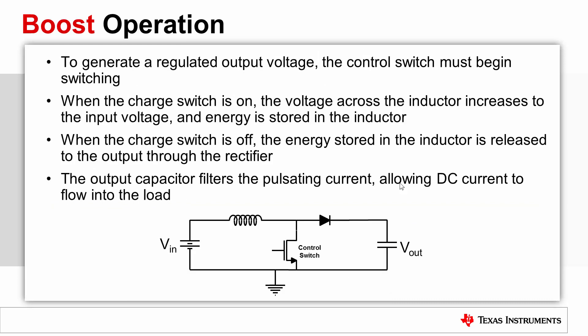Outlined here is a high-level overview of the boost converter's operation. Operation begins when the control switch starts switching, and steady-state operation is defined by two states: the control switch being on or the control switch being off. When the control switch is on, the voltage across the inductor is the input voltage, and the current increases through the inductor by V = L·di/dt. When the control switch is off, energy is dumped into the output from the inductor and the inductor current decreases during this period by the same V = L·di/dt equation. The output capacitor is used to filter the inductor AC current, which allows DC current to flow into the load.